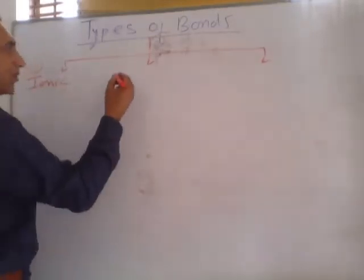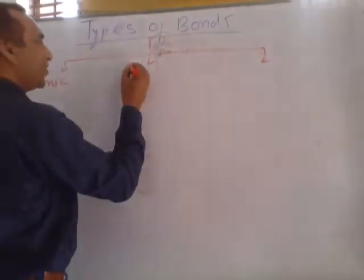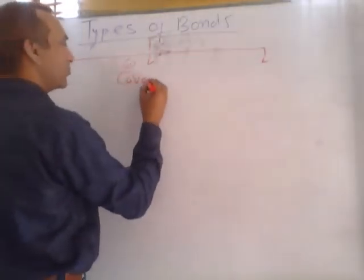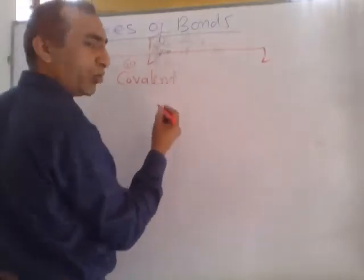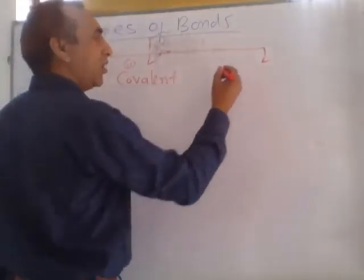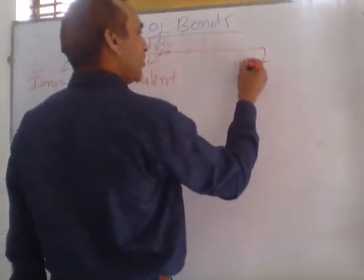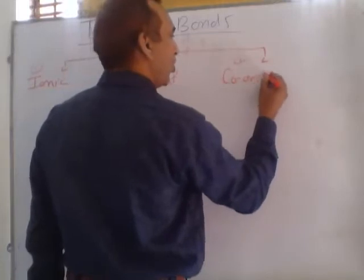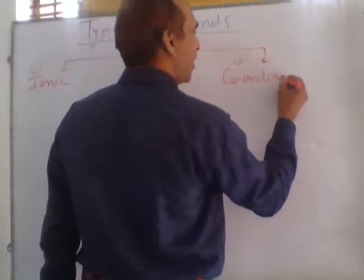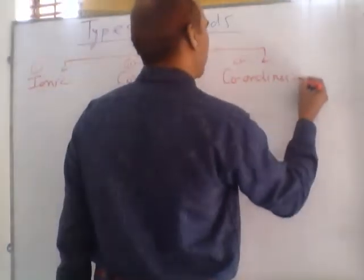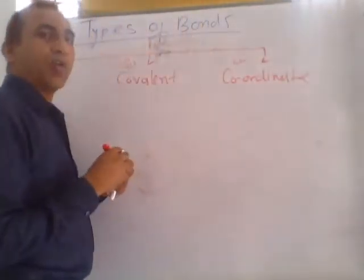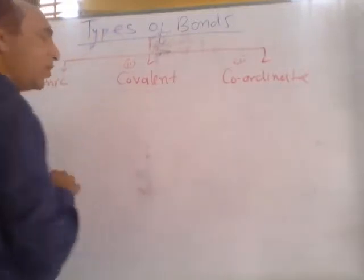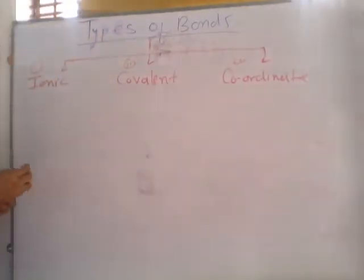First is ionic bond. Second is covalent bond. And third one is coordinate bond.